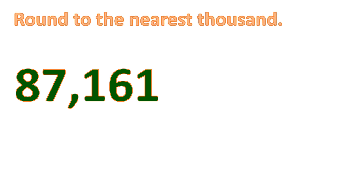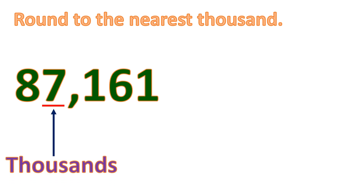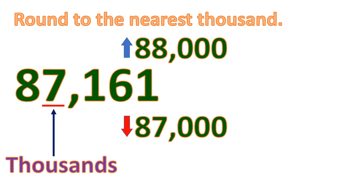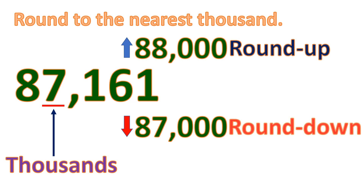Let's say we have the number 87,161 and we want to round this to the nearest thousand. We focus on the digit in the thousands place, and we are going to round this to a multiple of a thousand. It will either go up to 88,000 or down to 87,000. Going up means you round up, and going down means you round down.